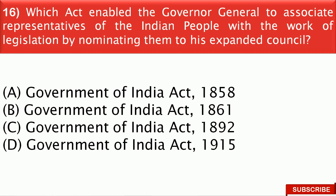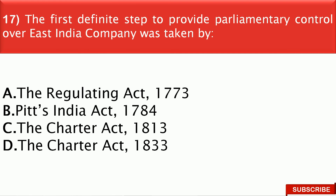Next question: Which act enabled the Governor General to associate representatives of the Indian people with the work of legislation by nominating them to his expanded council? The right answer is option B — that is the Government of India Act 1861. Next question: The first definite step to provide parliamentary control over the East India Company was taken by — the right answer is option A, that is the Regulating Act of 1773.